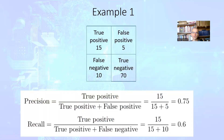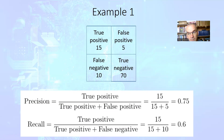Coming back to our example, we can find the precision and recall, which are equal to 0.75 and 0.6 respectively. These are the characteristics of this classification algorithm.